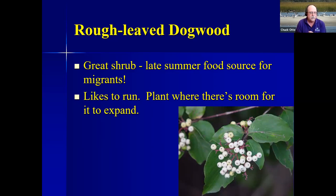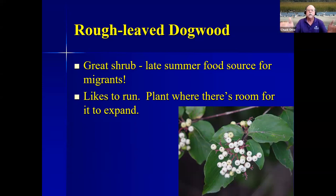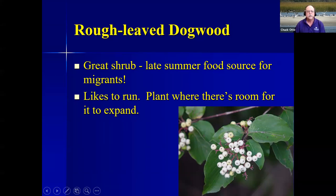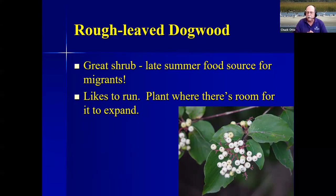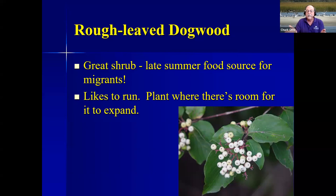Roughleaf dogwood is a native shrub — another pasture manager's headache, but natural and native. It's a late summer food source for migrants. I'm leading a bird walk at Milford Lake this weekend where there are long rows of rough-leaved dogwoods just filled with little white berries ripening up right now. By the 1st of October, every single one will have been eaten by birds. It spreads by rhizomes, so plant it where there's room to expand — not alongside the house. Wildlife love it; it's the preferred nesting plant for Bell's Vireo.